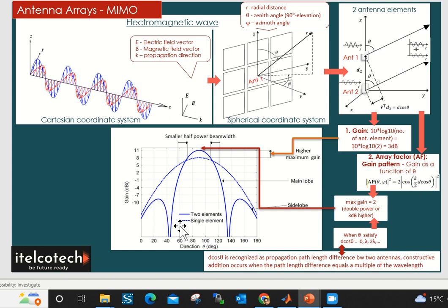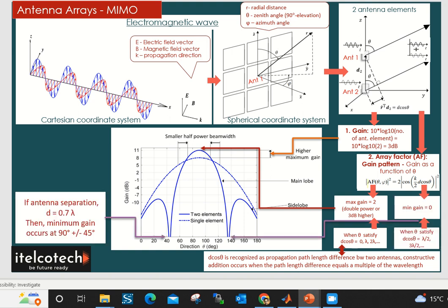And accordingly, if you see, the zenith angle has been squeezed in case of two antennas, which is kind of making a beam as compared to the single antenna element. And also we have certain points where the gain will be zero. That's how the beam is being formed.